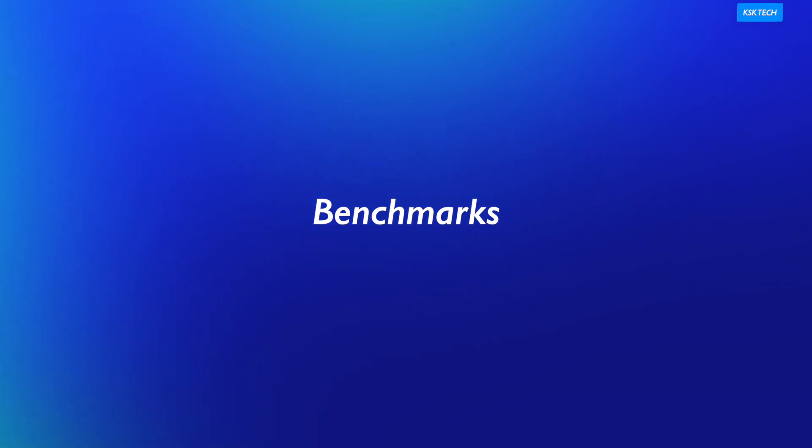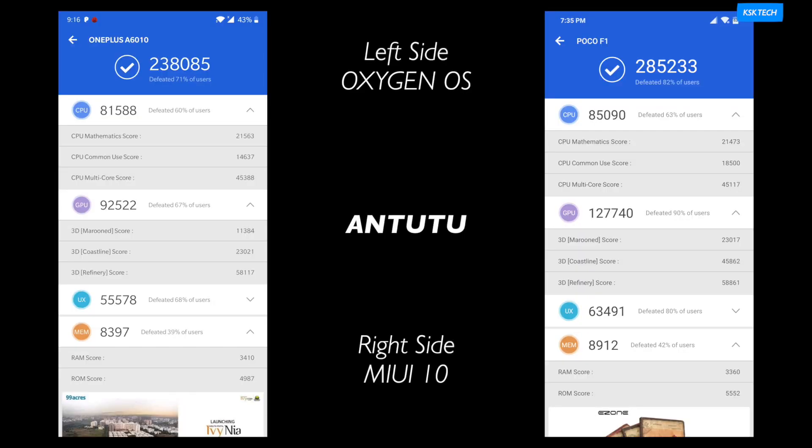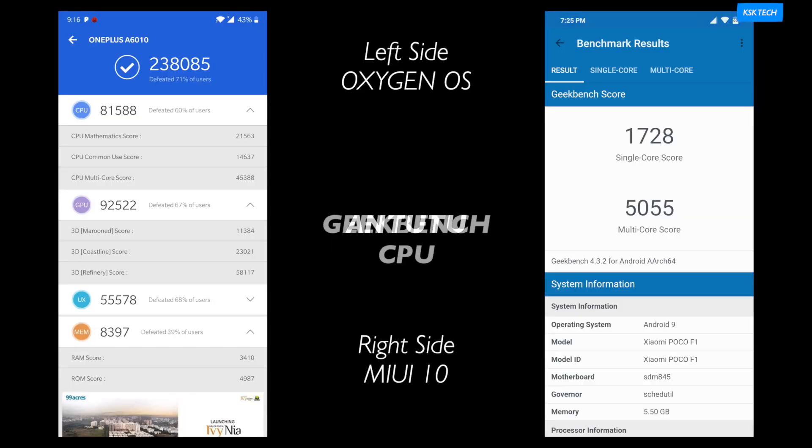So we have two ROMs available for Poco F1: OxygenOS in the form of a GSI, and MIUI 10 which is optimized for Poco F1 to get the most out of the silicon. As usual, I ran benchmark apps like Geekbench and Antutu on both of these ROMs to find out which ROM scores higher.